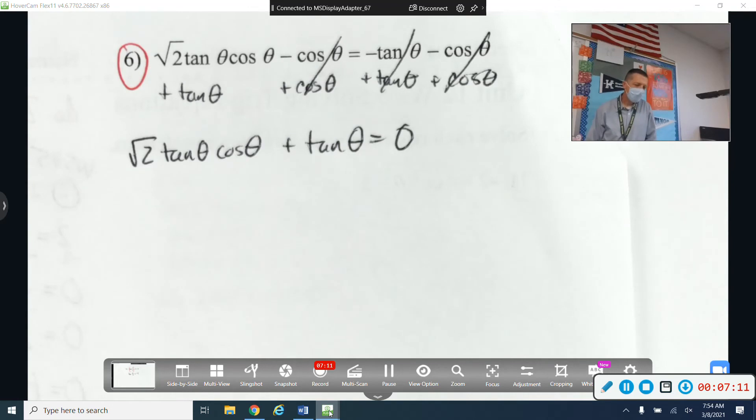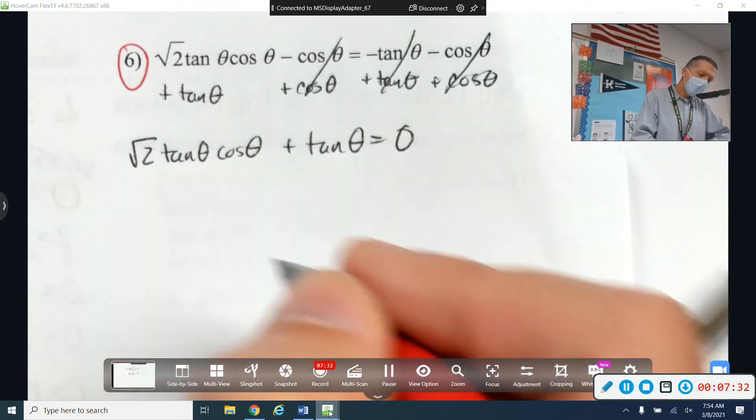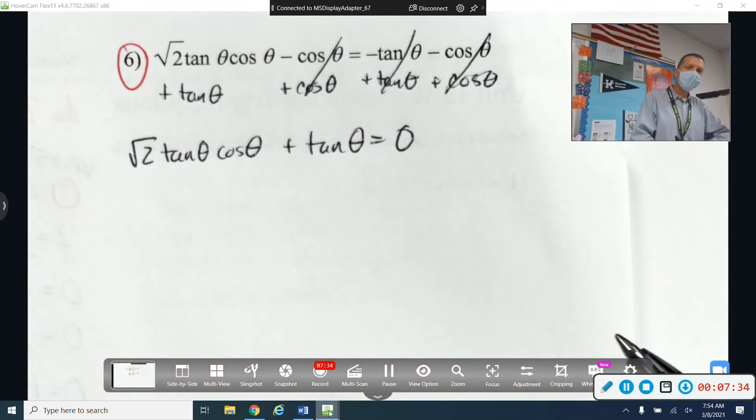And I think number five is kind of like that as well. It looks really hard and then you realize they just threw in some extra stuff that's going to go away. How am I going to factor this one? This is why I picked number six.